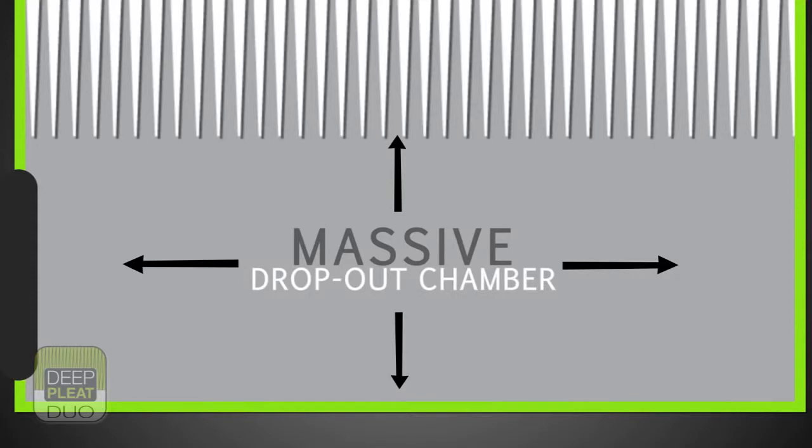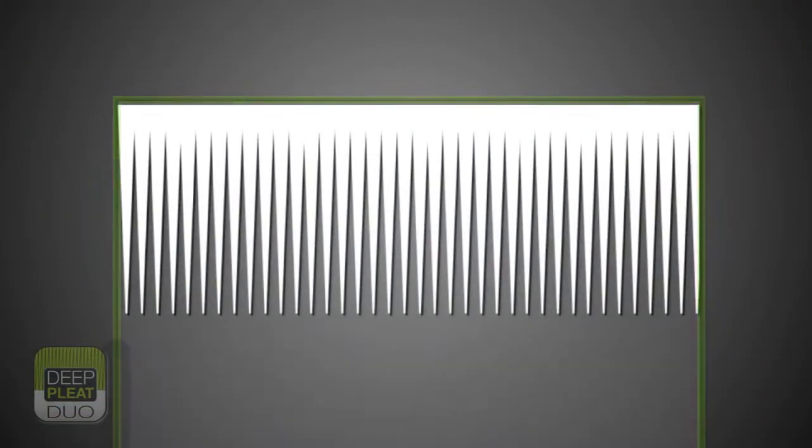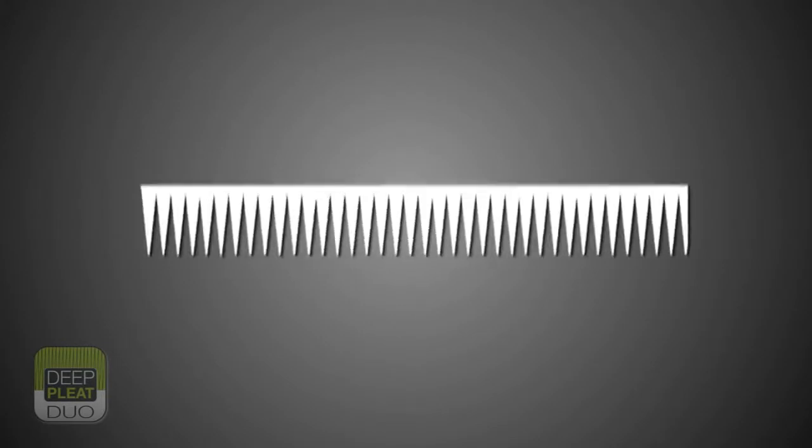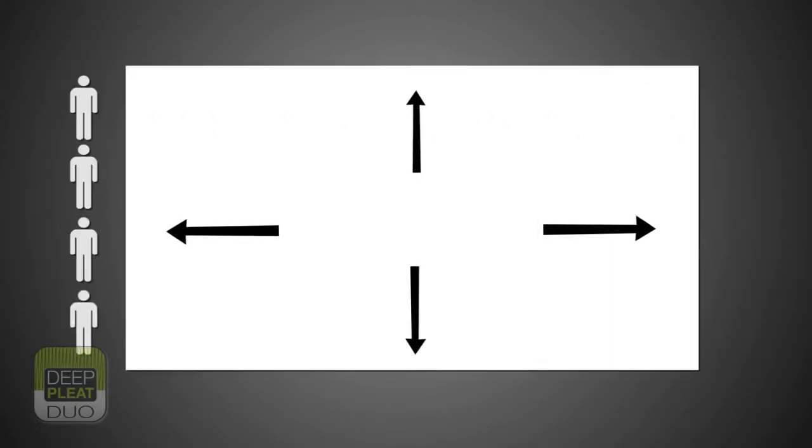Above the dropout chamber but still within the housing, we have sealed the 200mm deep pleat F8 media, giving a substantial surface area in excess of 12 square metres.